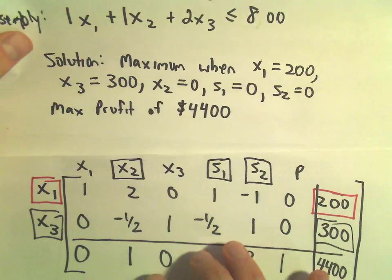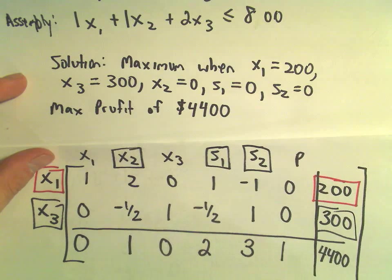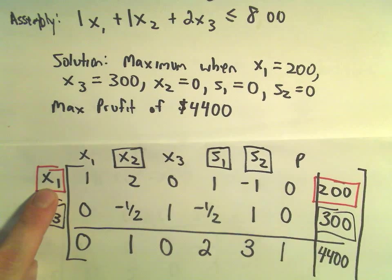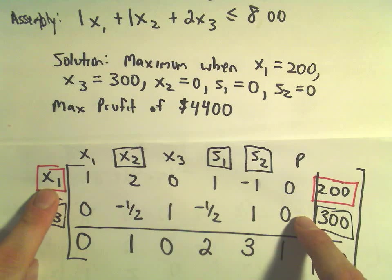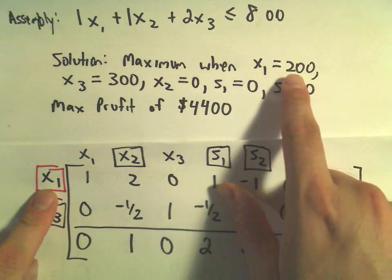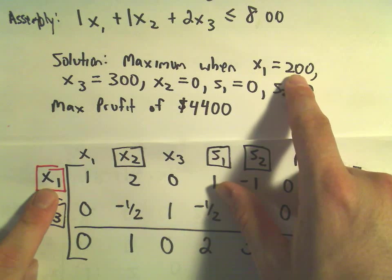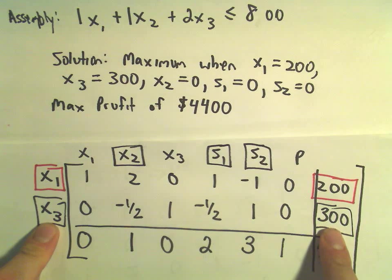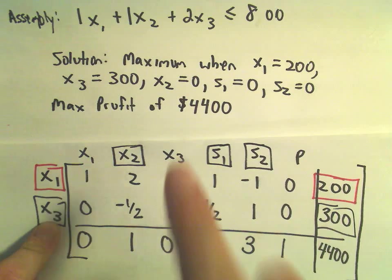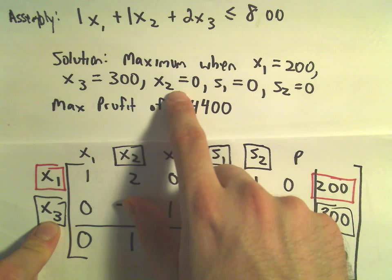So again, we're going to get a max profit of $4,400. x₁ was the number of components of type A. So make 200 components of type A, make 300 components of type C, and by default, make zero components of type B.